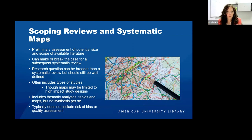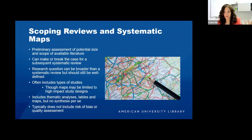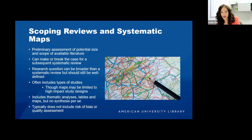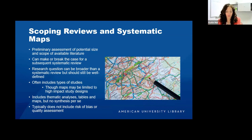Scoping reviews often include multiple types of studies, include thematic analysis, tables, and maps, but there's no synthesis of studies per se. They typically do not include a risk of bias or quality assessment. Scoping review questions often ask: what interventions are used to address outcome X in population Y? Or what are the characteristics of the literature on intervention X in setting Y? These questions are a lot broader — we're not looking at specific effects as we often are in a systematic review.